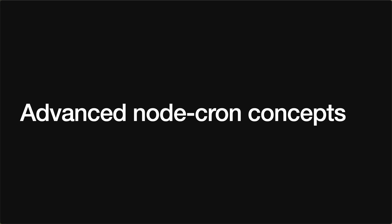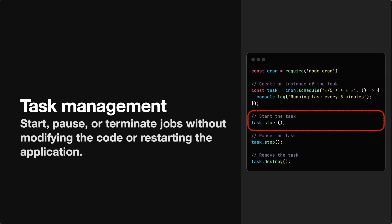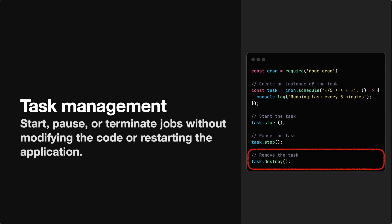Using Node-Cron for executing jobs on a regular interval is relatively straightforward once you understand cron syntax, but there are some advanced concepts to dive into as well. Starting with task management: you can assign the output of `cron.schedule` into a variable where you can execute additional methods such as starting, stopping, and destroying the task. You'd assign the output to a task object, then call `task.start` to start it up — usually at the start of the application. You can call `task.stop` to pause the task, allowing Node-Cron to continue tracking it but no longer executing it. Or call `task.destroy` to let Node-Cron forget the task altogether and remove it from memory.